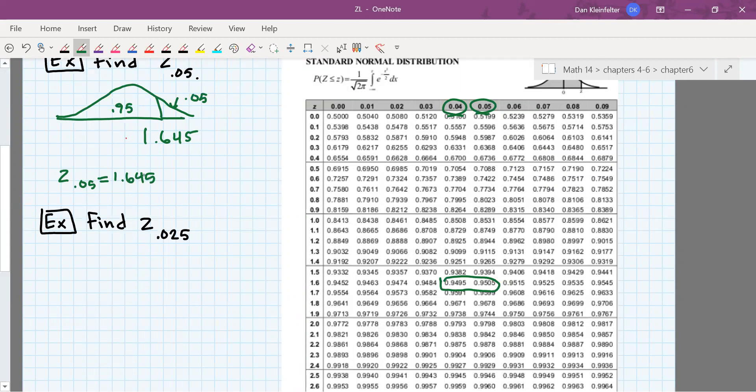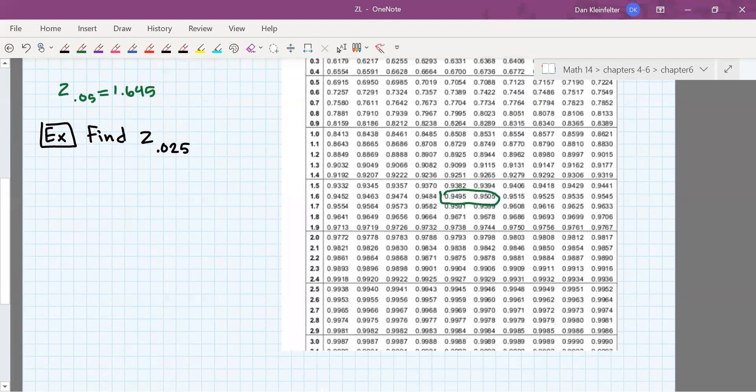And what that means is the z-value that cuts off an area of 0.05 to its right is going to be 1.645. Okay, let's try one more of these.